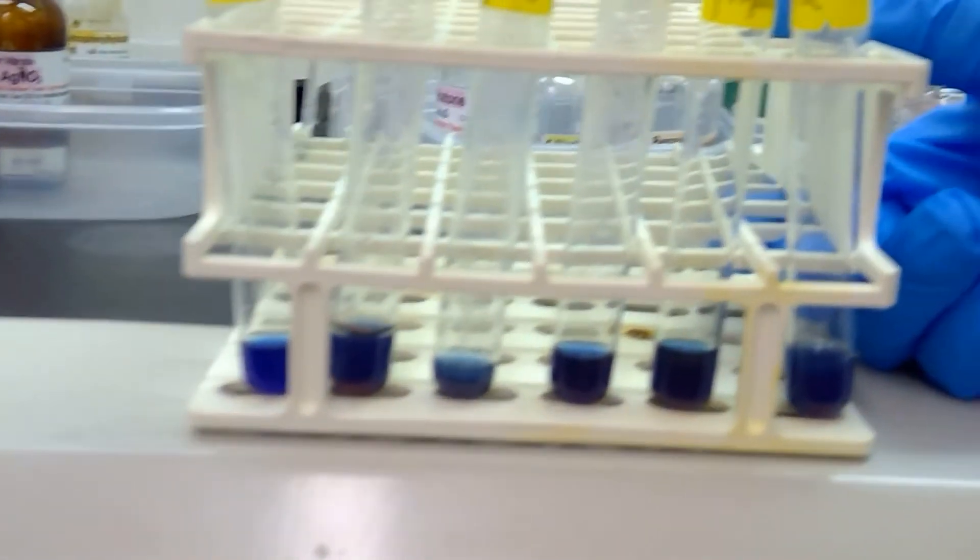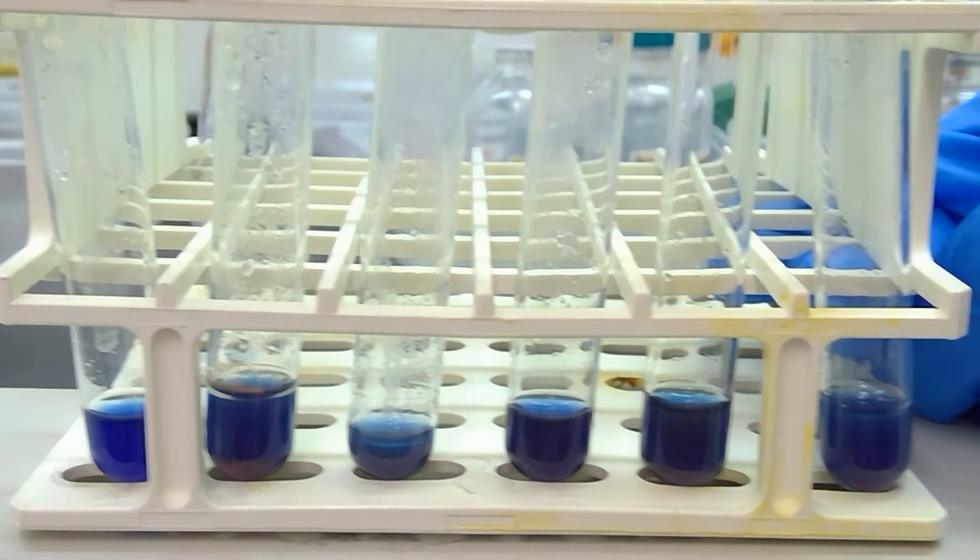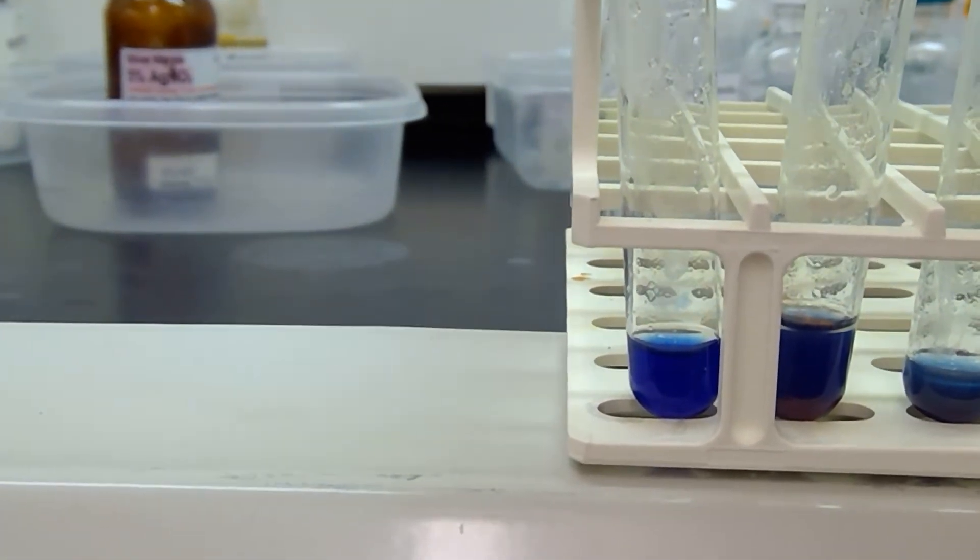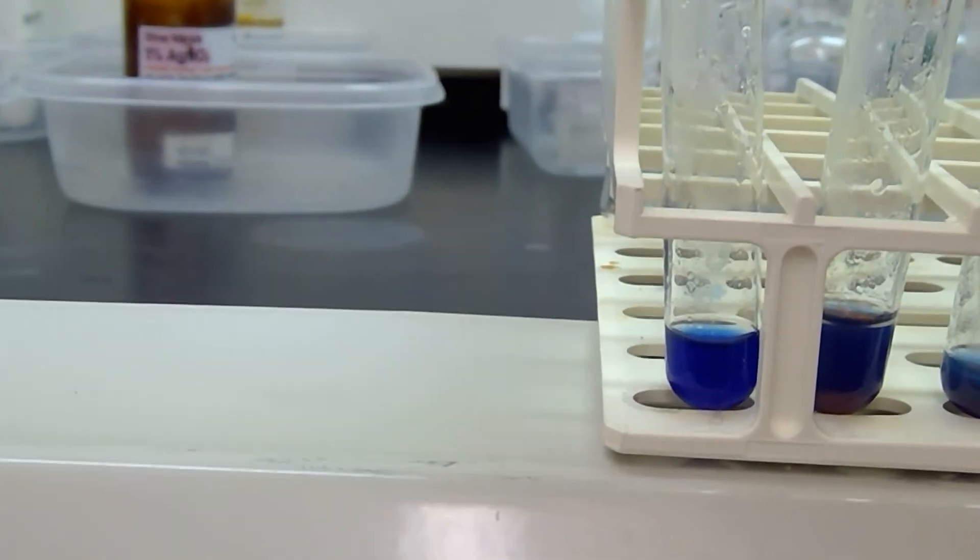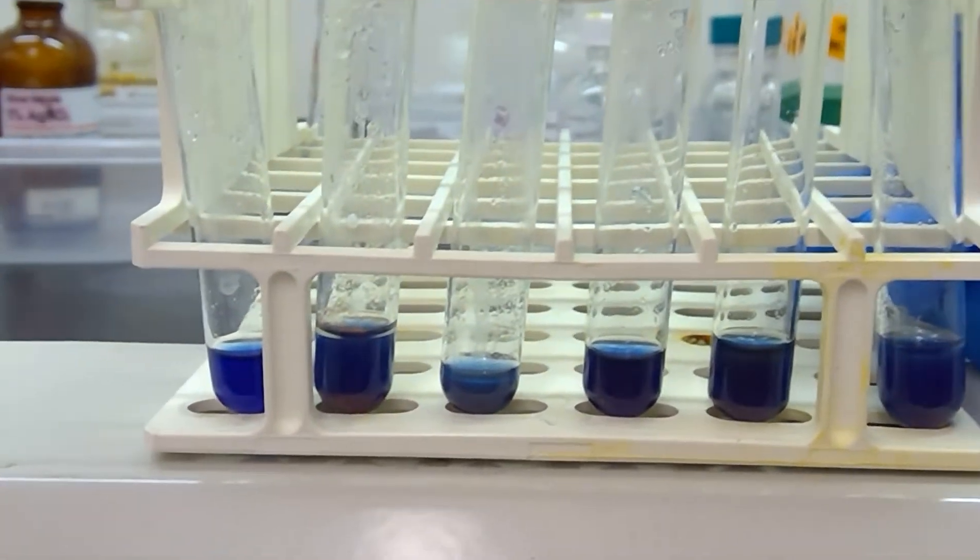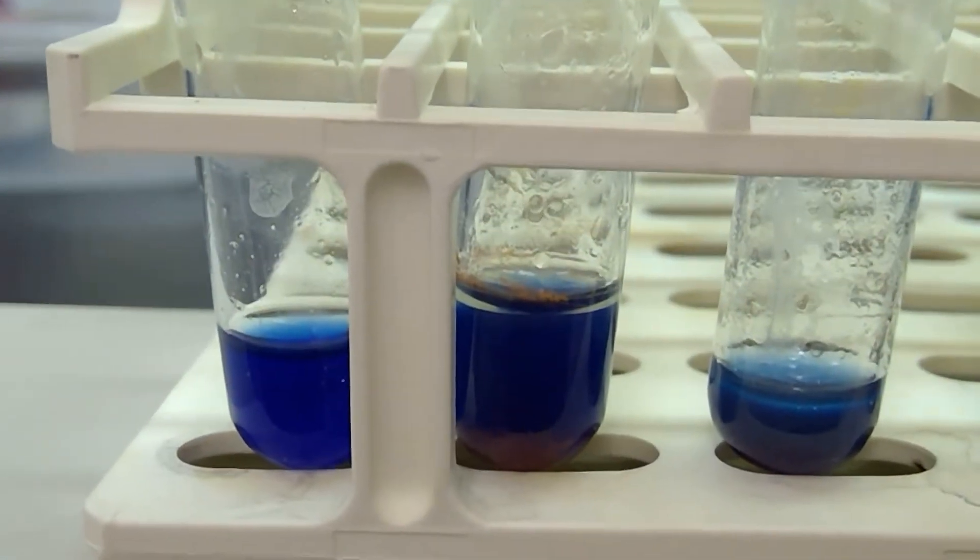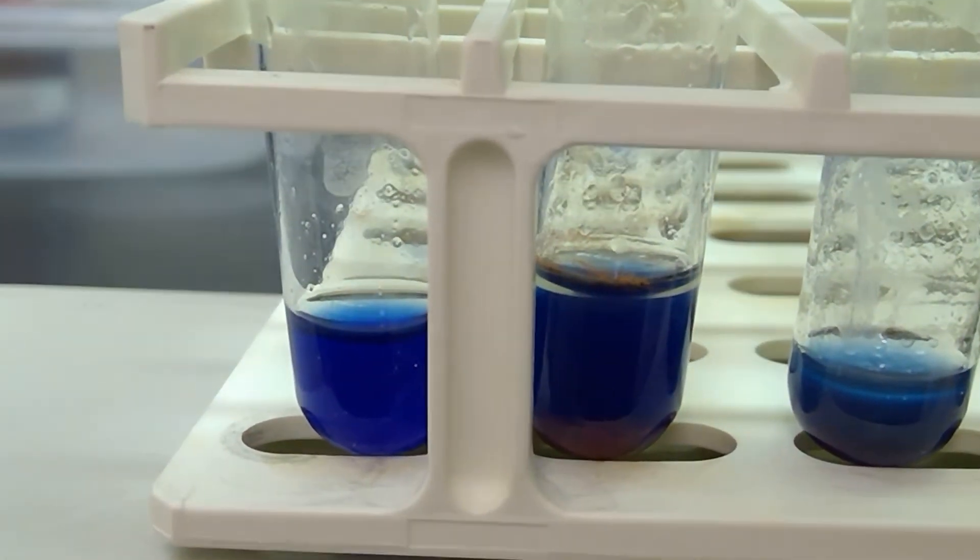First on the left we have acetone. Acetone did not change colors and we expected that because it is a ketone. Next up we have heptanal, and heptanal has a nice red rim of solid around it. I'm going to go ahead and spin it around so you can see that we have some solid precipitate that persists even towards the bottom of the test tube.